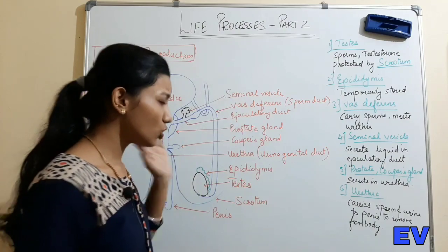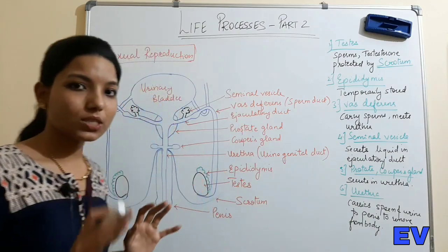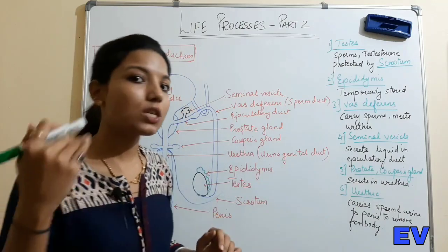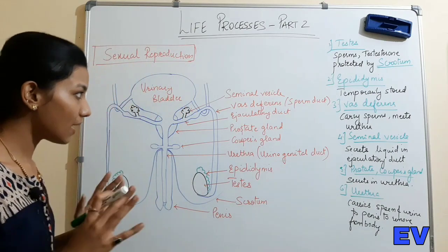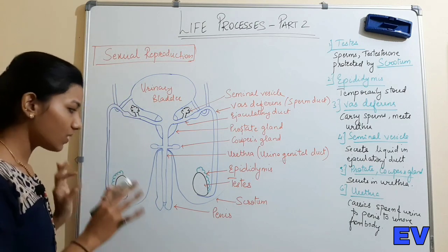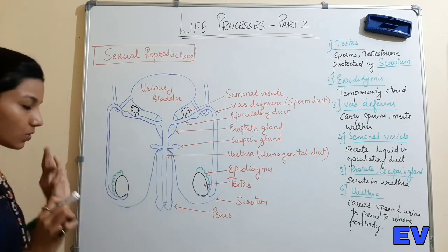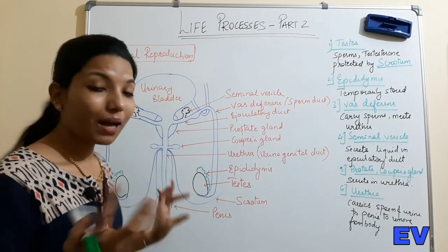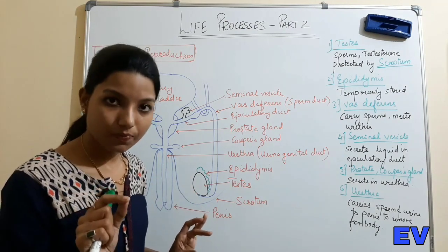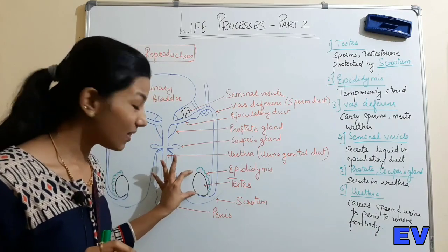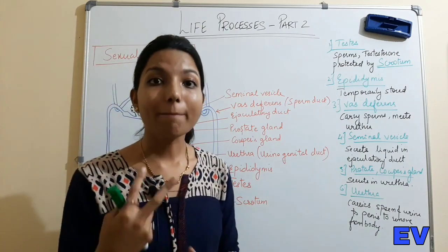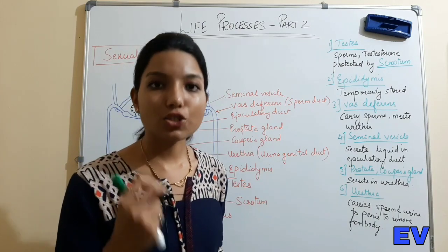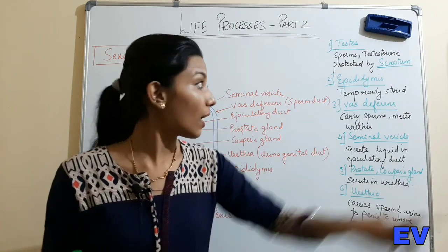Don't get scared by the labelings in the diagram - there aren't that many. If you go sequence-wise, you will cover everything. First, this is your testis. In the testis, two things are produced: sperms and male sex hormones - that is testosterone.